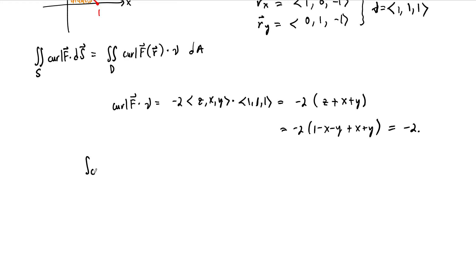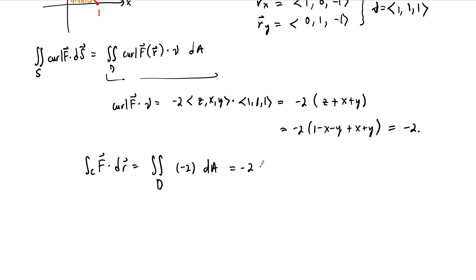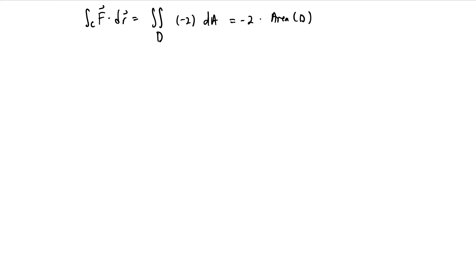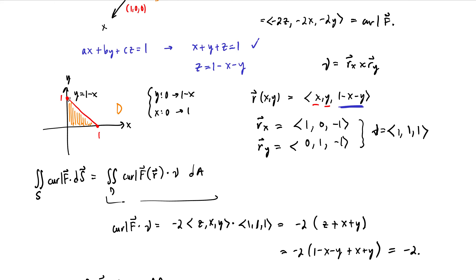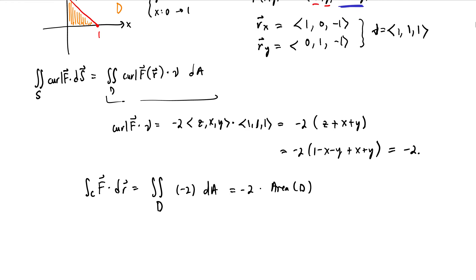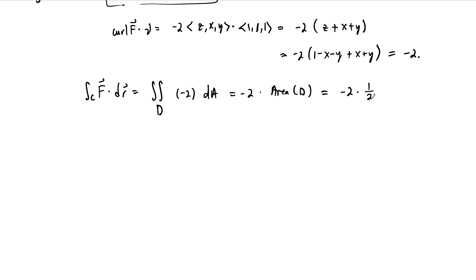All of this work was done to compute the path integral, which we've now reduced to the double integral over the triangular region D of negative 2 dA. That's just negative 2 times the area of region D. We don't even need calculus to compute that area — it's simply one-half times base times height, which is one-half. So the answer is negative 2 times one-half, which equals negative 1. The value of our path integral around this triangle is negative 1.